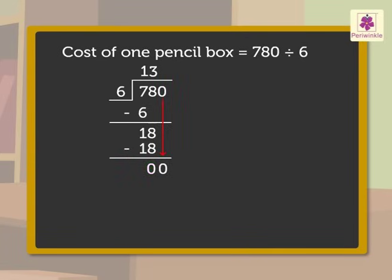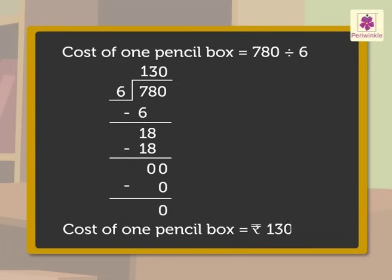Write 0 in the tenths column. Now, bring down 0 from the ones column. We know that any number multiplied by 0 gives 0 as the product. So, write 0 above 0. And 0 minus 0 is equal to 0. Thus, we get the quotient as 130. So, here we come to know that the cost of 1 pencil box is 130 rupees.